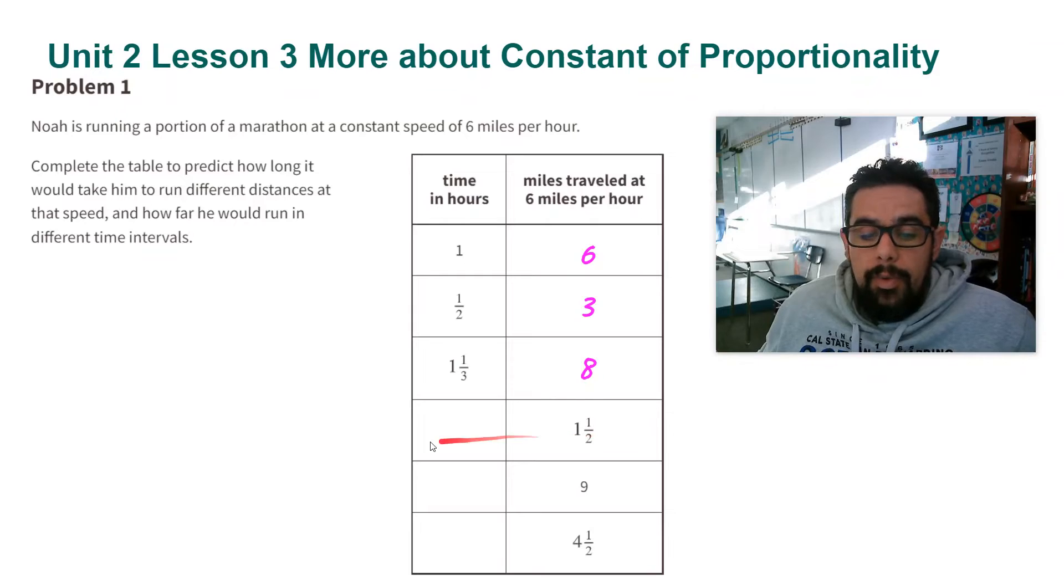For the other way, going backwards here, instead of multiplying by the constant I'm going to divide by the constant. So here I'm going to do one and a half divided by 6. That's going to tell me how many hours. That's a quarter hour.